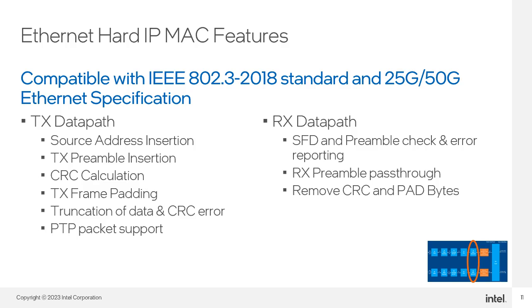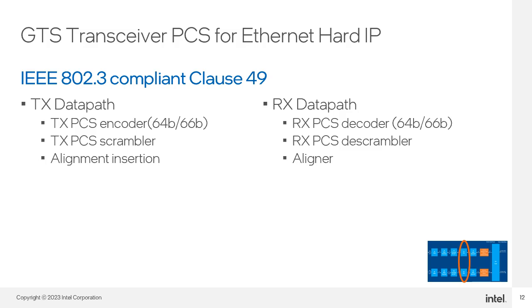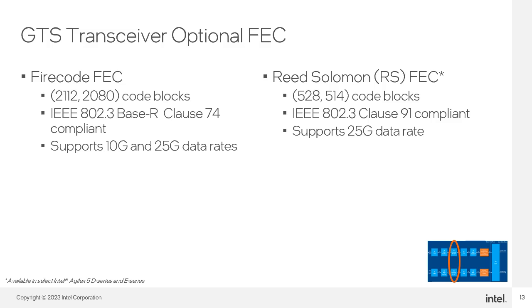Many of these features are optional and can be enabled dynamically using control signals. The GTS PCS is compliant to IEEE 802.3 Clause 49 and contains support for 64B/66B encoding and decoding, scrambling and de-scrambling, and alignment insertion and detection. Two FEC modes are supported: FireCode 2112/2080, compliant with IEEE 802.3 Base-R Clause 74, supporting both 10G and 25G; and RS-FEC 528/514, compliant with IEEE 802.3 Clause 91 and supporting 25G. While FireCode FEC reduces latency, RS-FEC produces a better bit error rate for random and burst errors.